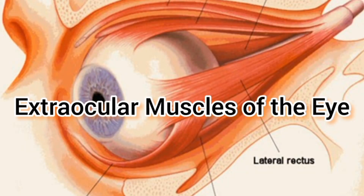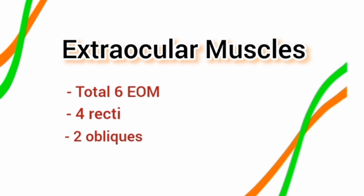Today we are going to discuss the extraocular muscles of the eye — the muscles which help in the movement of the eyeball. There are a total of six extraocular muscles in each eye: four recti muscles and two oblique muscles.